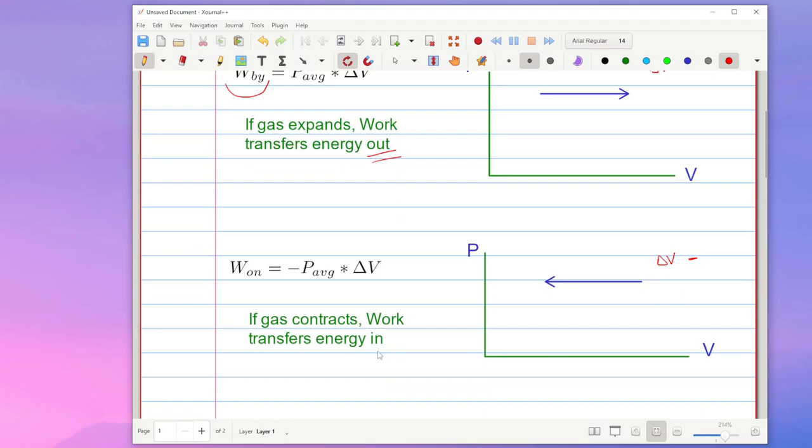As opposed to if I had a negative value and the negative here and the negative here are going to actually cause a positive amount of work done on the gas. And that's when the work is being transferred into the gas by some external force. And so if the gas contracts or is compressed we have work being done on the gas.